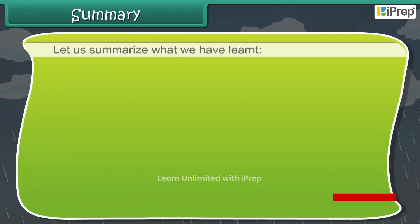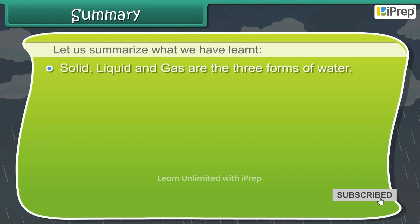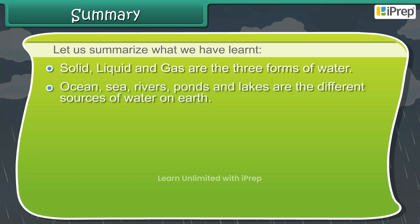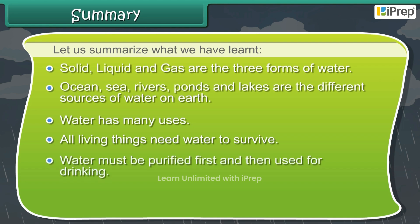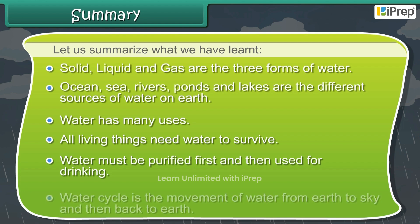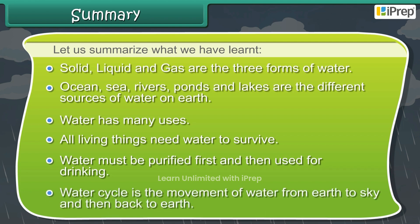Let us summarize what we have learned. Solid, liquid, and gas are the three forms of water. Oceans, seas, rivers, ponds, and lakes are the different sources of water on earth. Water has many uses; all living things need water to survive. Water must be purified first and then used for drinking. The water cycle is the movement of water from earth to sky and then back to earth.